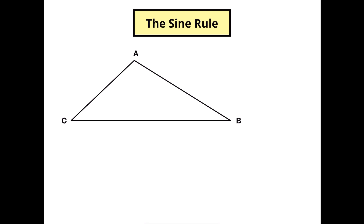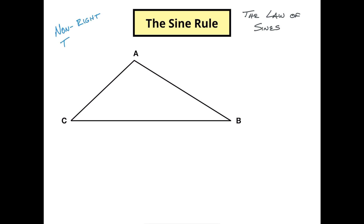I call this the sine rule, but this is also called the law of sines, so you might see both of these terms refer to what we're about to do. What we have here is a non-right triangle — this is very clearly a non-right triangle — which is when you use the law of sines or the sine rule. It's only used with non-right triangles. Only with non-right triangles.